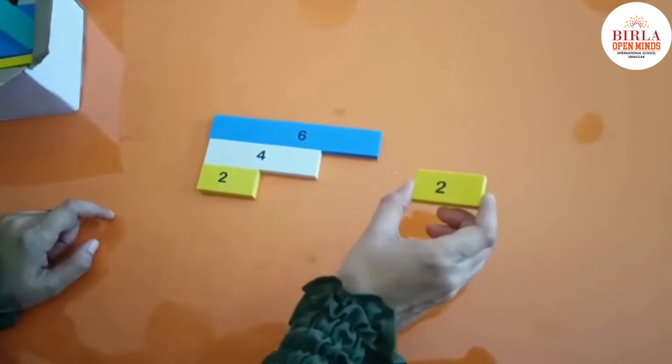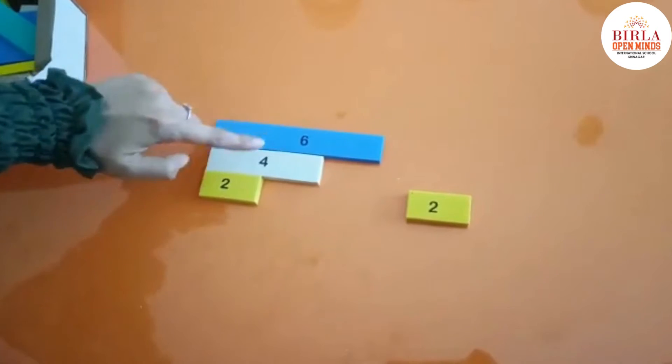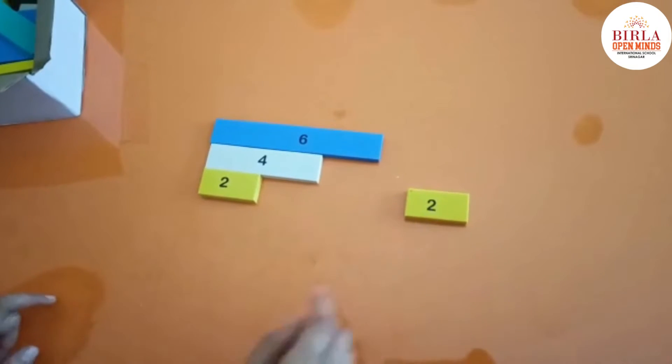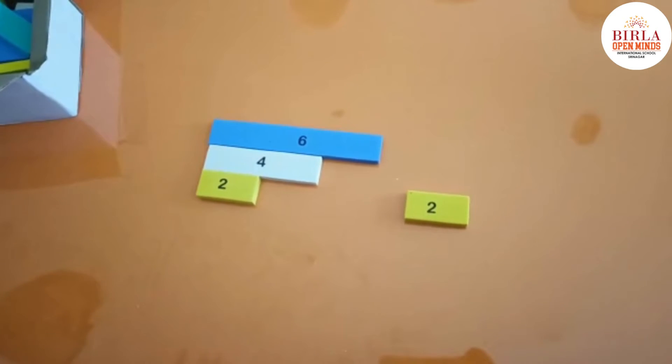What is the last strip? HCF. So the HCF of 6 and 4 is 2. Now we will take the next example.